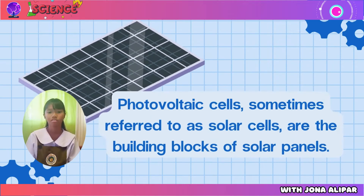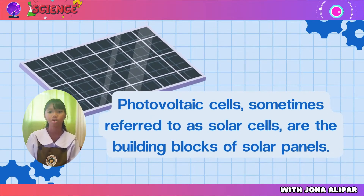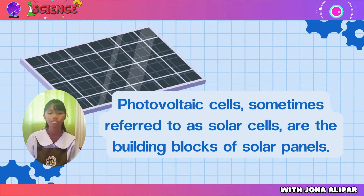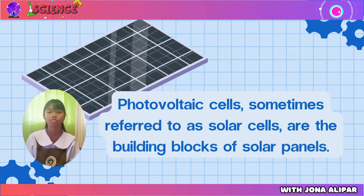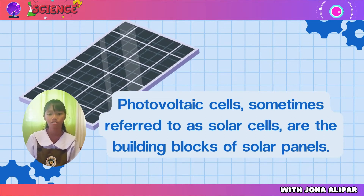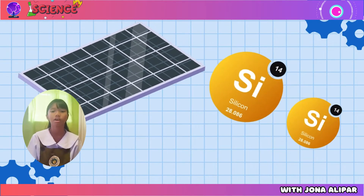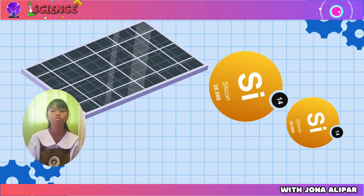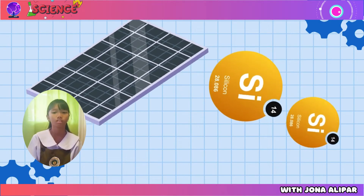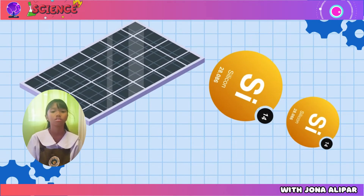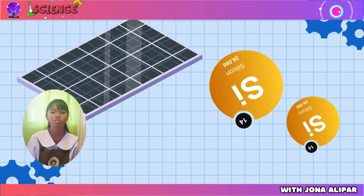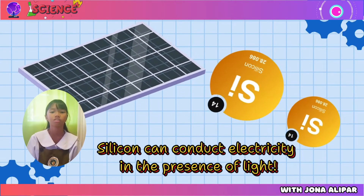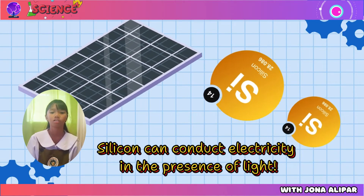Photovoltaic cells, sometimes referred to as solar cells, are the building blocks of solar panels. Usually, silicon and semiconductor materials are used to make these cells. The reason silicon is used is because, in the presence of light, it can conduct electricity.